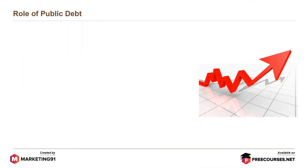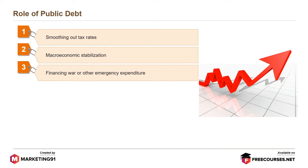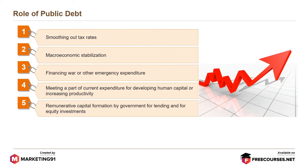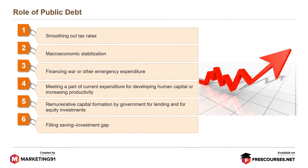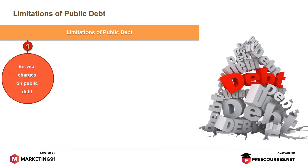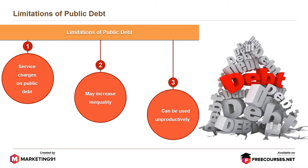The role of public debt includes smoothing out tax rates, macroeconomic stabilization, financing war or other emergency expenditure, meeting a part of current expenditure for developing human capital or increasing productivity, remunerative capital formation by government for lending and equity investments, and filling the saving-investment gap. Limitations of public debt include that service charges on public debt may increase inequality and can be used unproductively.